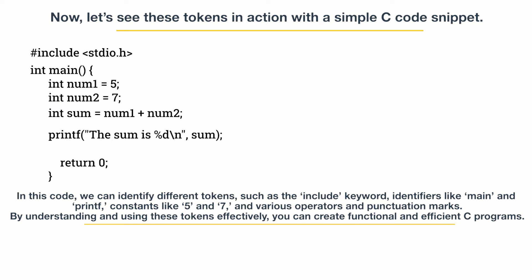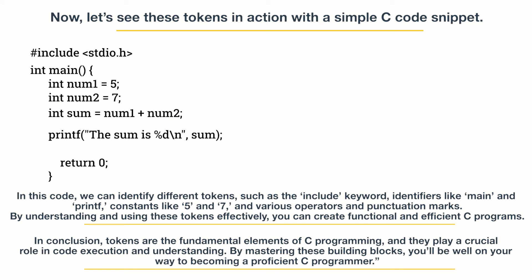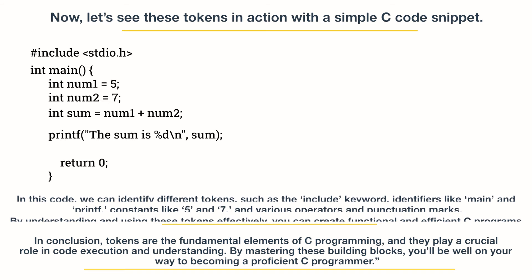By understanding and using these tokens effectively, you can create functional and efficient C programs. In conclusion, tokens are the fundamental elements of C programming, and they play a crucial role in code execution and understanding. By mastering these building blocks, you'll be well on your way to becoming a proficient C programmer.